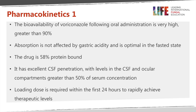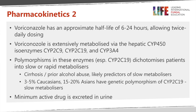Voriconazole is quite highly protein bound — much less than itraconazole or posaconazole — and that allows it to get into other spaces like ELF in the lung fluid and the brain. You get good levels in the CSF and also in the eyes, which is often quite difficult to achieve with itraconazole, posaconazole, amphotericin, or the echinocandins. The half-life varies by individual — shorter in rapid metabolizers, children, and young people — and longer with liver dysfunction or certain polymorphisms of CYP51 enzymes. It goes through three enzyme systems: CYP2C9, CYP2C19 (probably the most important), and CYP3A4.